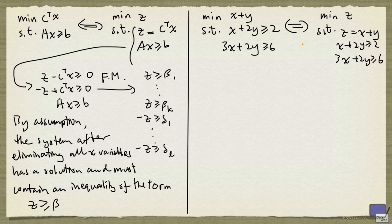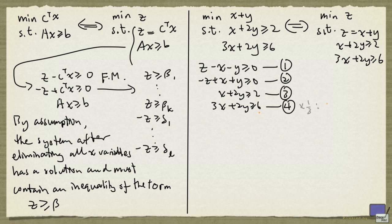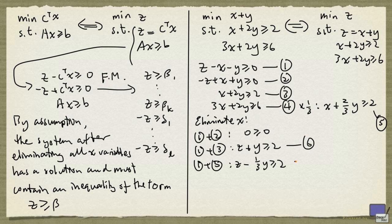Let's go through the process on this example. The system we are looking at will be labeled inequalities 1, 2, 3, and 4. We're going to eliminate x, and first we need to make sure that the coefficients of x are minus 1, 1, or 0. The only thing we need to do here is multiply inequality 3 by one third, giving us x plus two-thirds y ≥ 2, which we label 5. Then we eliminate x, and the system we end up with is labeled 6 and 7.